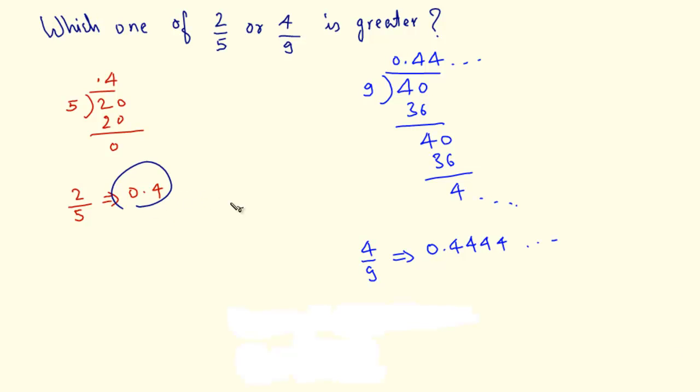Now if I write these two numbers side by side, 0.4 and 0.4444, let's take up to 3 digits after the decimal point. I can say that 0.4 is less than 0.4444. And 0.4 is nothing but 2 by 5 and 0.4444 is 4 by 9. So naturally, 4 by 9 is greater than 2 by 5.